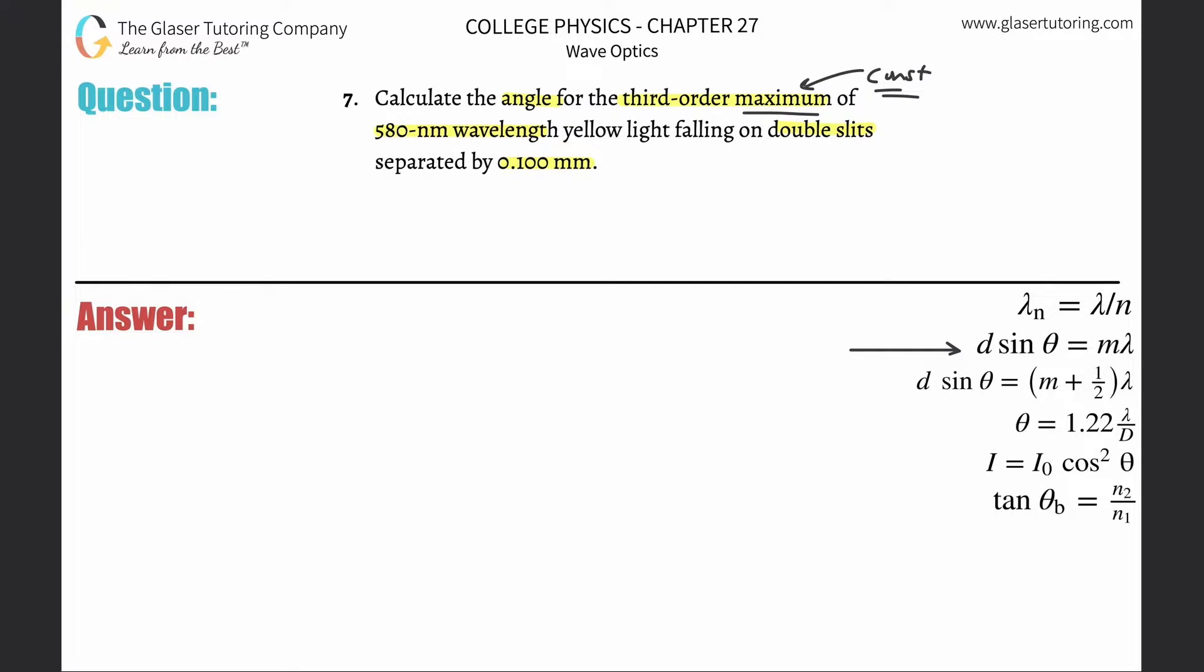We're going to be dealing with the second formula from the top on the right-hand side. This is the distance that the slits are separated by, multiplied by the sine of the angle, which equals the order multiplied by the wavelength of light.